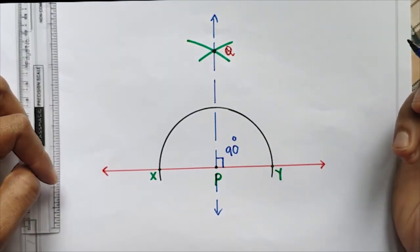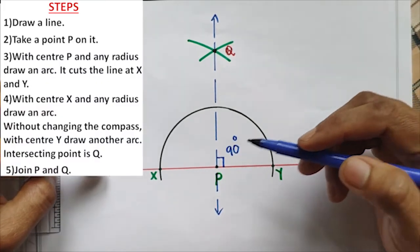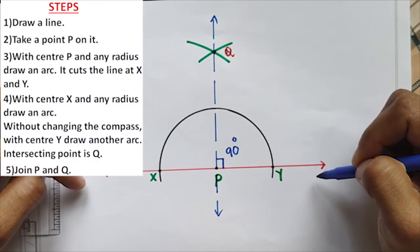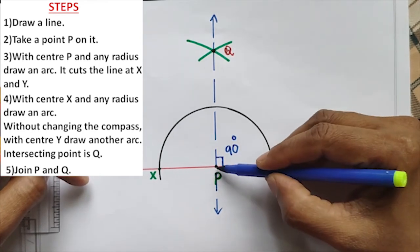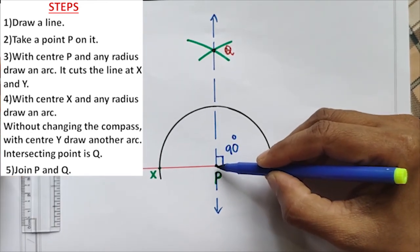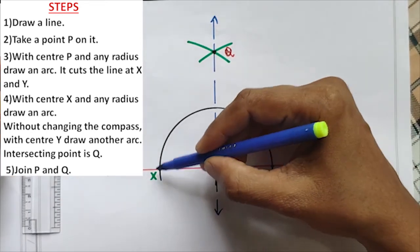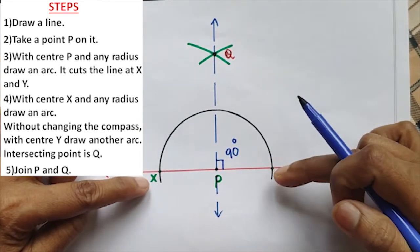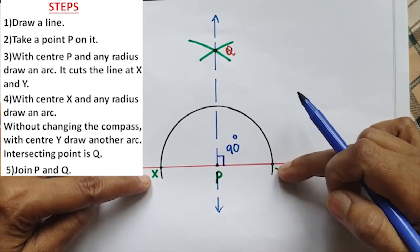Once again I will explain. First draw a line. Take a point P on it. Then with center P draw an arc. It intersects at two points, X and Y.